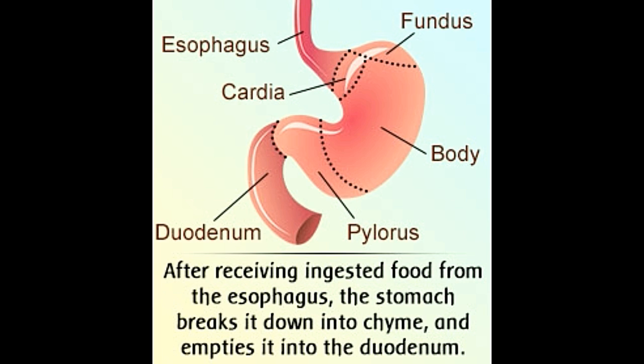When we eat, enzymes in the mouth act on the food. This food then passes from the esophagus to the stomach. The stomach acts as a storage vessel for the food. Normally, the stomach can hold up to a liter of food at a given time, though this capacity can vary from person to person. Food usually remains in the stomach for about 2 hours.